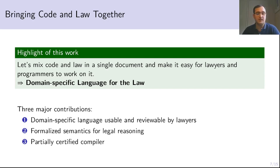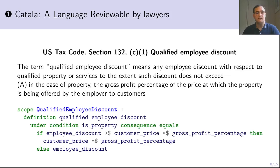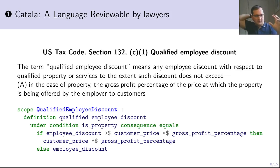First, we present the general syntax of this domain-specific language that has to be usable and reviewable by lawyers to ensure the correctness of the code. Second, we present a formalized semantics for this language which fits the logical structure of legal documents and legal reasoning. And third, we partially certify the compiler of our language. This language is called Catala, and I'm going to present an example of what it looks like on a section of the US tax code.